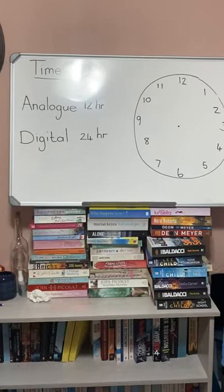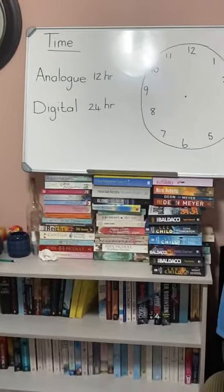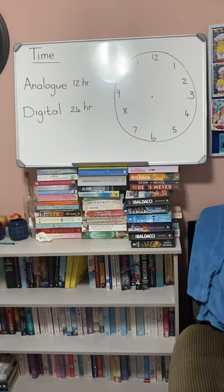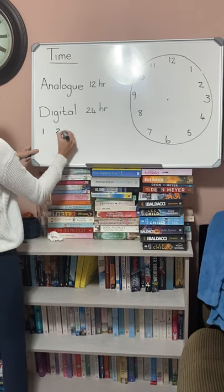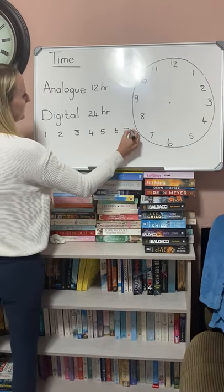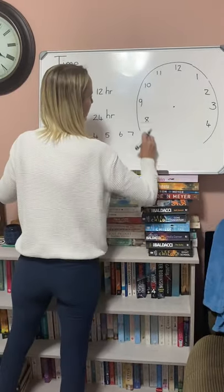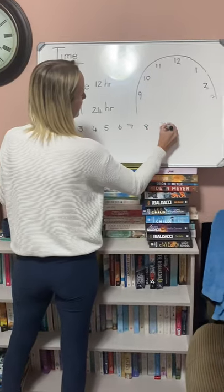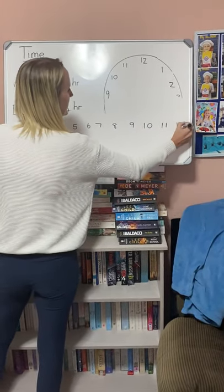But if a digital clock didn't go twenty-four hours, if I just saw one o'clock and then a normal one o'clock again, I wouldn't know if it was day or night. So what they do is — on an analog clock — one, two, three, four, five, six, seven, eight, nine, ten, eleven, twelve.